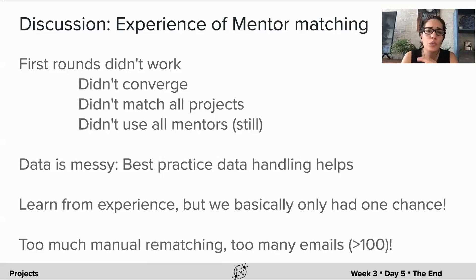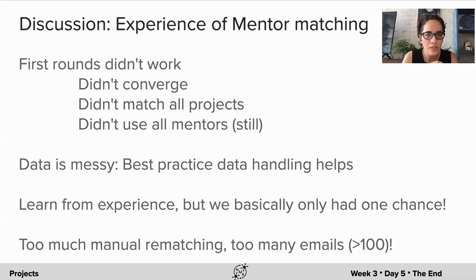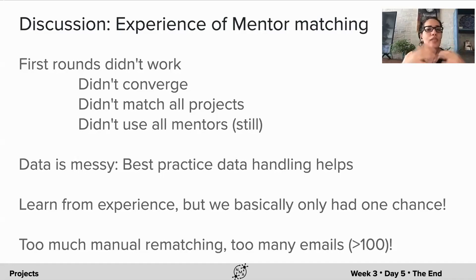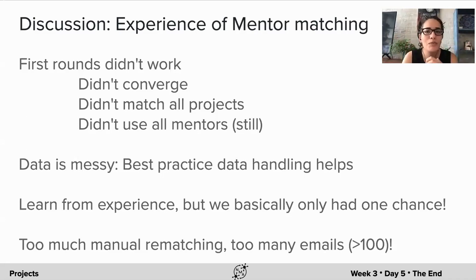Another issue was that we were working with very messy datasets, meaning we were acquiring information from mentors over a couple of months across different platforms — Google Forms, Qualtrics, Airtables — so we needed to clean and aggregate all the data manually. We also had to deal with a huge number of emails; whenever we contacted students or mentors, we'd receive a lot of responses about things not working. We had to manually tweak and adjust parameters to get an acceptable match.